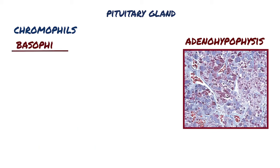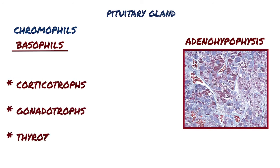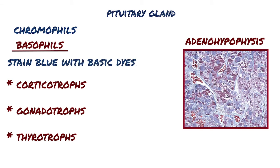The basophilic cells are the corticotrophs, gonadotrophs, and thyrotrophs. Basophils stain blue with basic dyes, and they secrete the remaining hormones associated with the anterior pituitary, including adrenocorticotrophic hormone (ACTH), luteinizing hormone (LH), follicle-stimulating hormone (FSH), and thyroid-stimulating hormone (TSH).